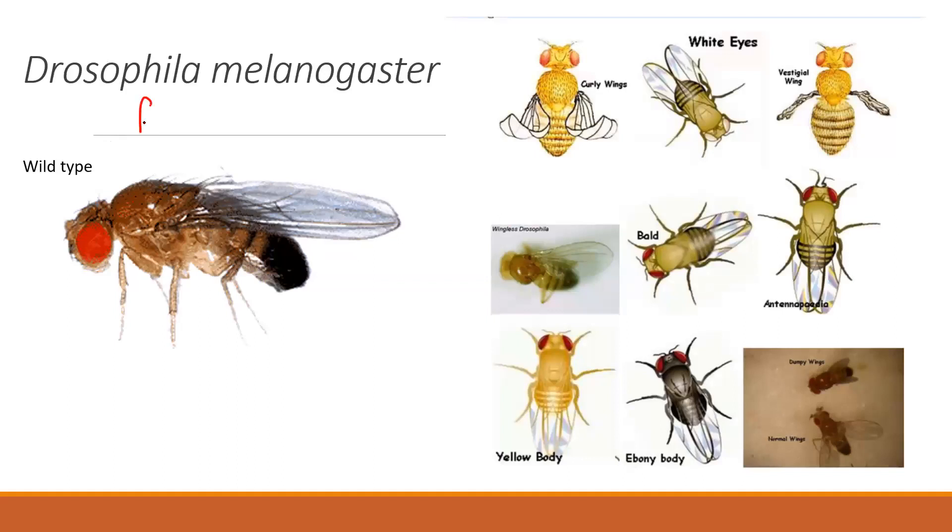Drosophila are the fruit flies that you might find in your kitchen, and they are the workhorse of genetics. Red eyes is called wild type, and because it's on the X chromosome we write the X chromosome.